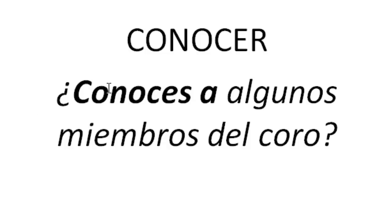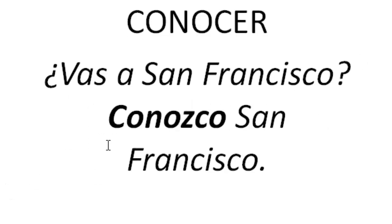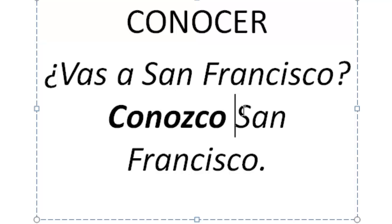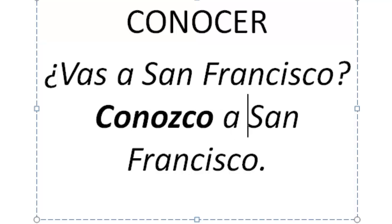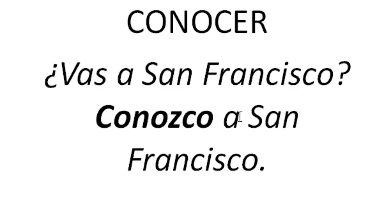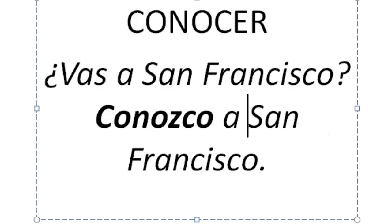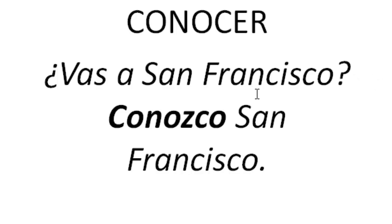Let's look at a few examples. ¿Conoces a algunos miembros del coro? — Do you know some members? Remember, this is the personal A, so when we're talking about people, we throw in that A. ¿Vas a San Francisco? Conozco San Francisco — I know San Francisco, I'm familiar with it, I've been there. If we added the A — conozco a San Francisco — now it's the personal A, saying I know the person St. Francis. But since we're talking about the city, we leave the personal A out: conozco San Francisco.